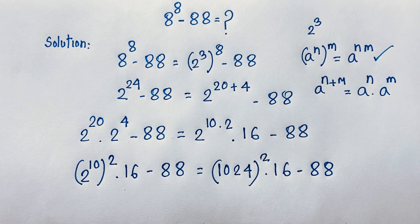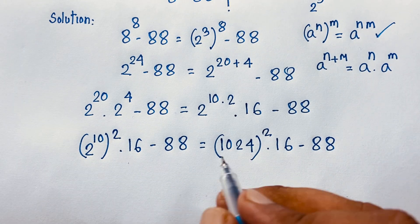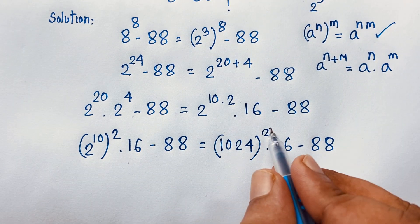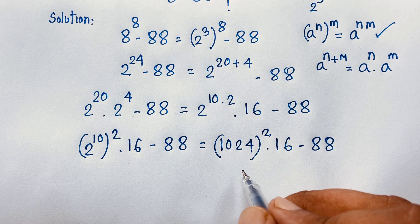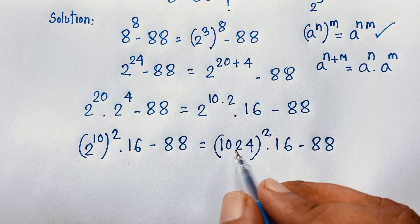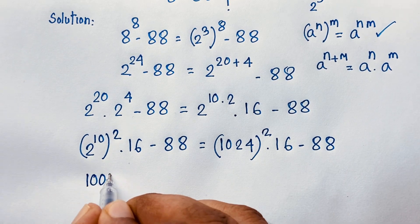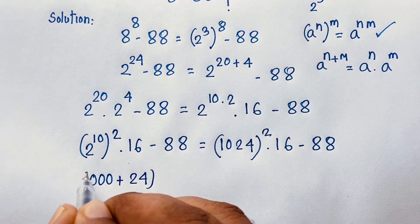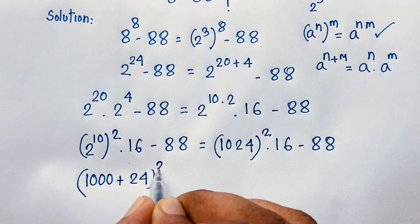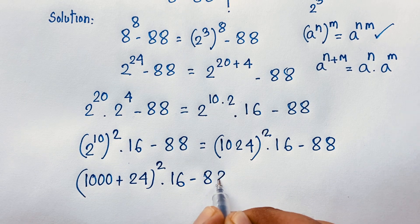Now here, solving this without a calculator — this square is equal to what, how to simplify this expression. So you know that 1024 it will be 1000 plus 24, bracket power is 2, times 16, minus 88.